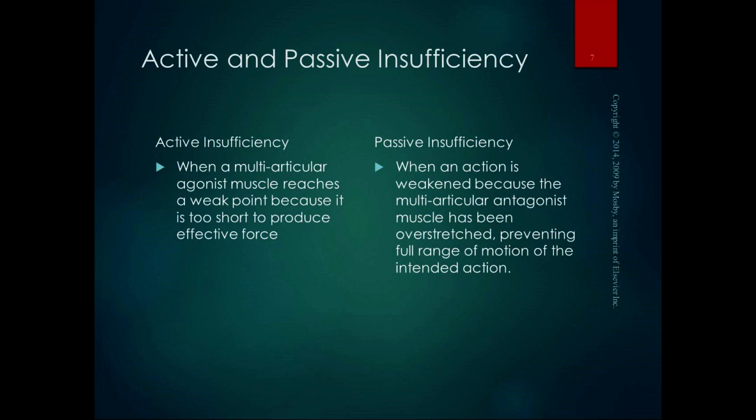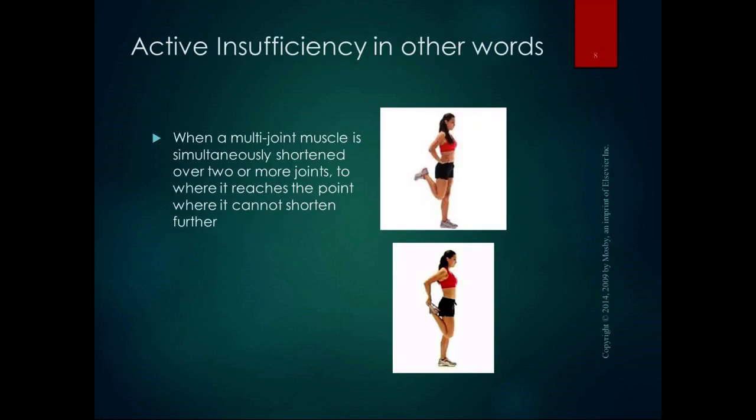Passive insufficiency is when an action is weakened because the multiarticular antagonist muscle has been overstretched, preventing full range of motion of the intended action. In other words, passive insufficiency is when a multijoint muscle is simultaneously stretched over two or more joints passively to the point where it cannot lengthen further, even though there's available range of motion in the joint.